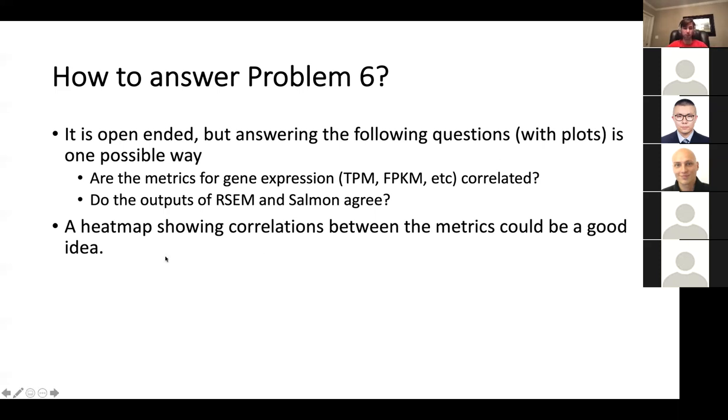You know, one option is a heat map showing correlations between the metrics might be kind of a natural approach for this problem. You can have on each row TPM, FPKM, read counts, effective length, and then it'd be like a four by four grid and each square in that grid would have the correlation between the row and the column. That might be a good approach. But it's pretty open-ended.